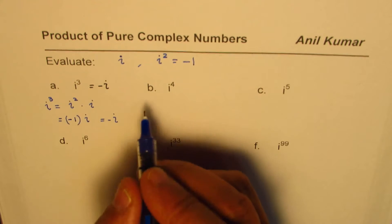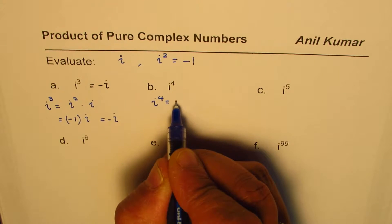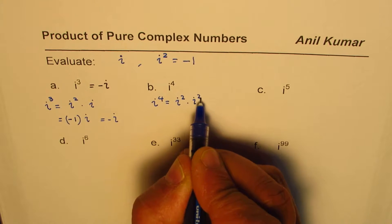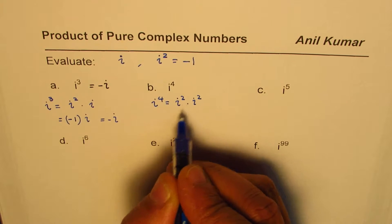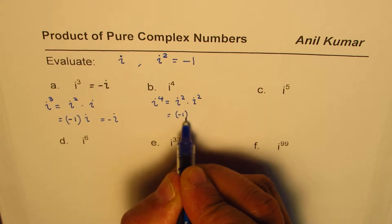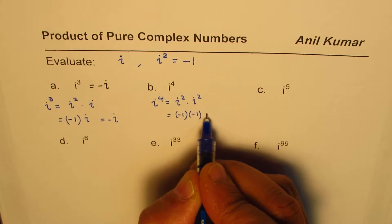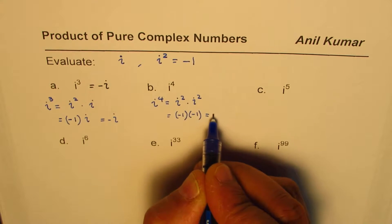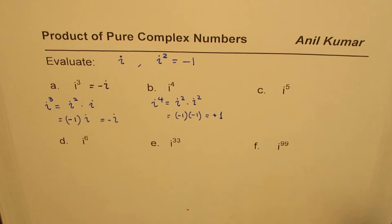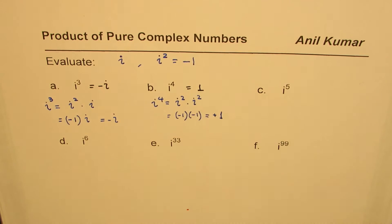How about i to the power of 4? We can write i to the power of 4 as i squared times i squared. Since i squared is minus 1, that becomes minus 1 times minus 1, which gives us positive 1. So i to the power of 4 equals positive 1.